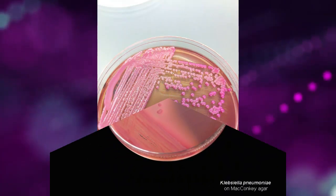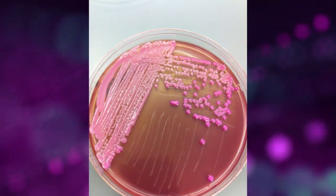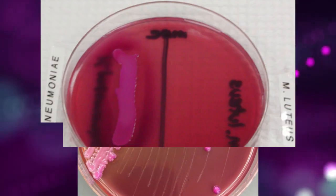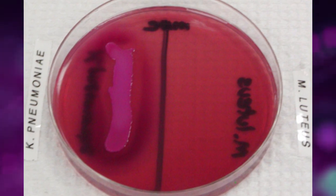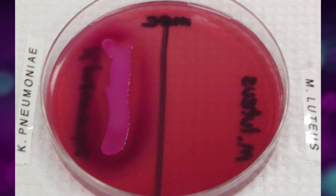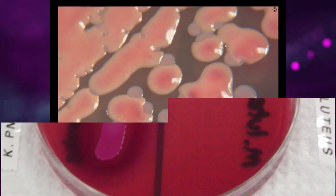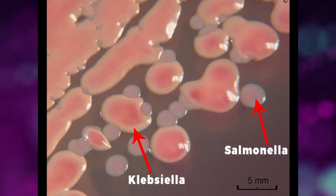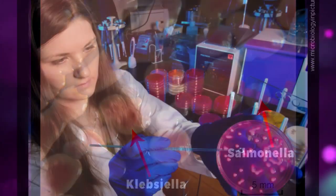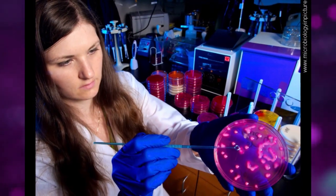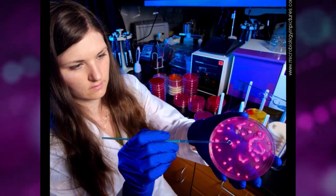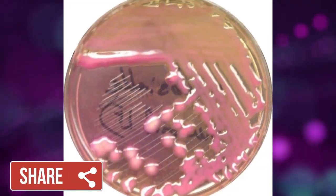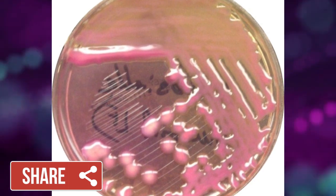Klebsiella pneumoniae colonies give pink color on MacConkey Agar media, due to fermentation of lactose, which is of great importance for differentiation of Klebsiella pneumoniae from other gram-negative bacteria and Salmonella species, which are non-lactose fermenters and give colorless colonies on MacConkey Agar. Though this pink color may not be clearly apparent in very mucoid colonies.